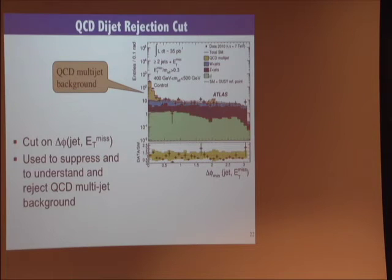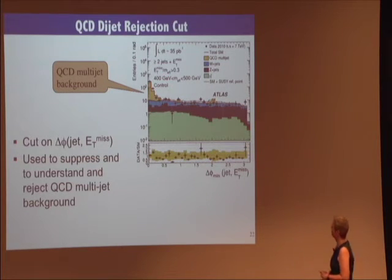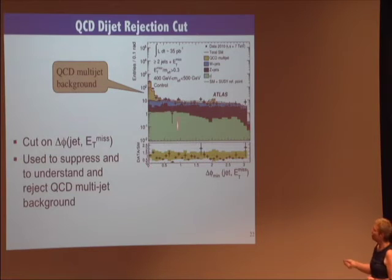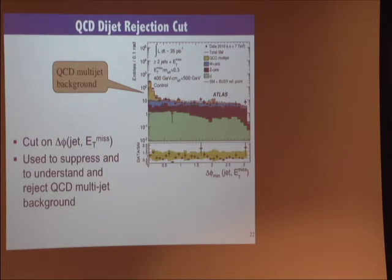This shows the delta phi between a jet and the missing ET and the closest jet. The QCD multijet background is shown in orange, and we cut at 0.4 which gets rid of all this background. By looking at what happens below 0.4, we see whether the data are modeled — and we see that the data agree well with the QCD multijet background in terms of normalization.